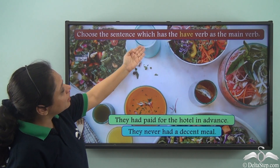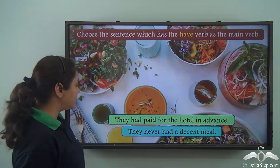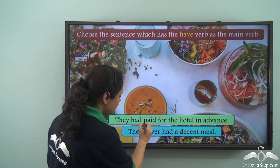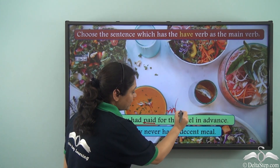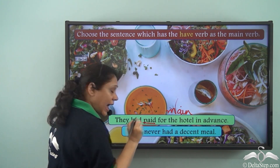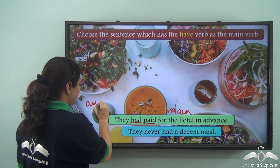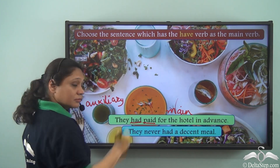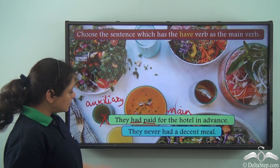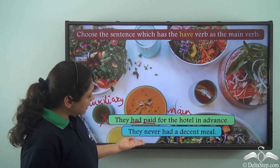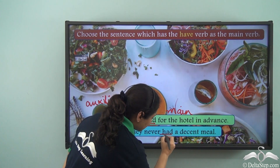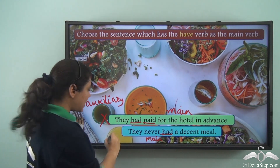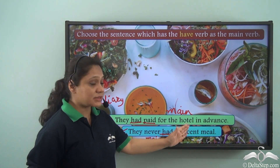Choose the sentence which has the 'have' verb as the main verb. First sentence: 'They had paid for the hotel in advance.' In this sentence, 'paid' is the main verb and 'had' is being used as the auxiliary verb, so this is not our answer. Second sentence: 'They never had a decent meal.' Here 'had' is being used as the main verb. So the correct sentence is: 'They never had a decent meal.'